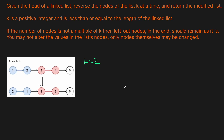We reverse the 1 and the 2, so 2 now points to 1. Now we want to reverse the next 2: we reverse 4 and 3, and now 1 is going to point at 4 instead of 3. Then 5 is left out because the total number of nodes is not a multiple of k, so we just leave it as is.